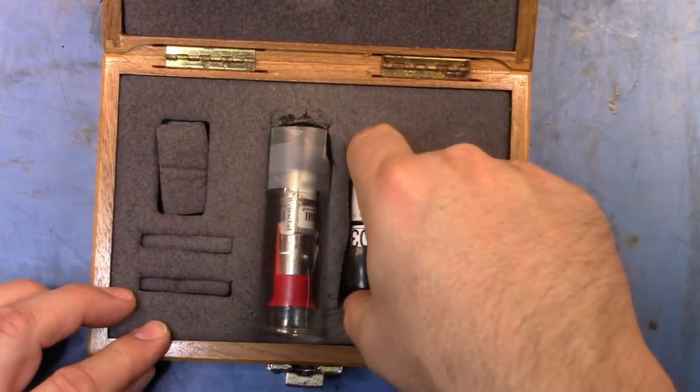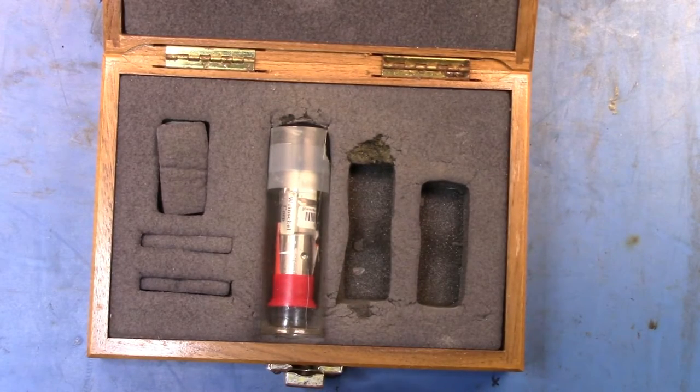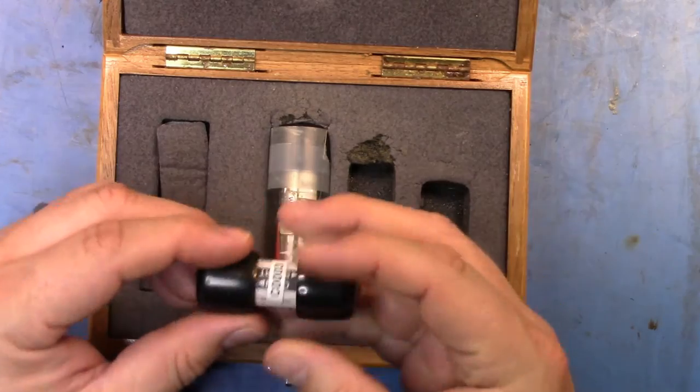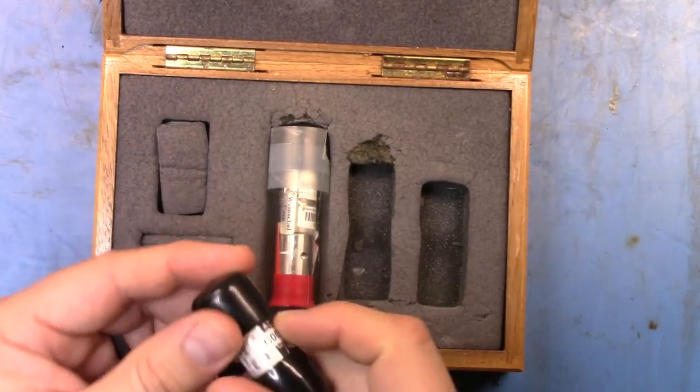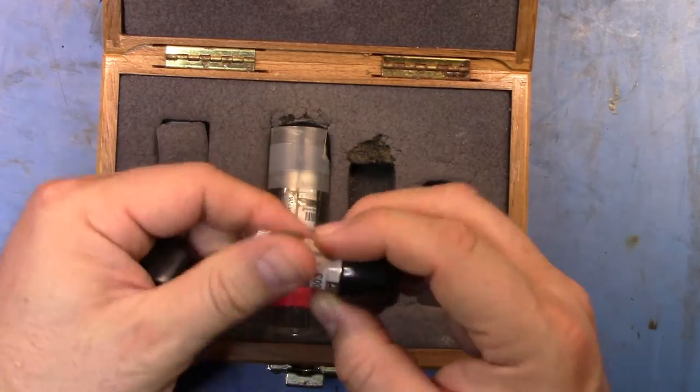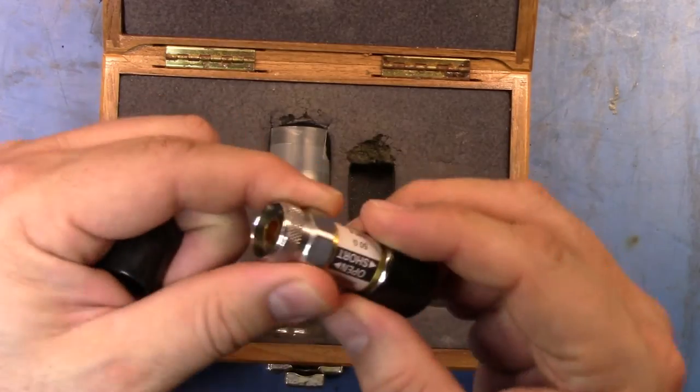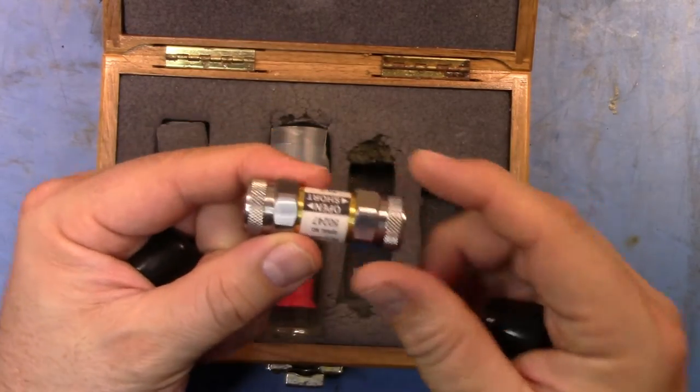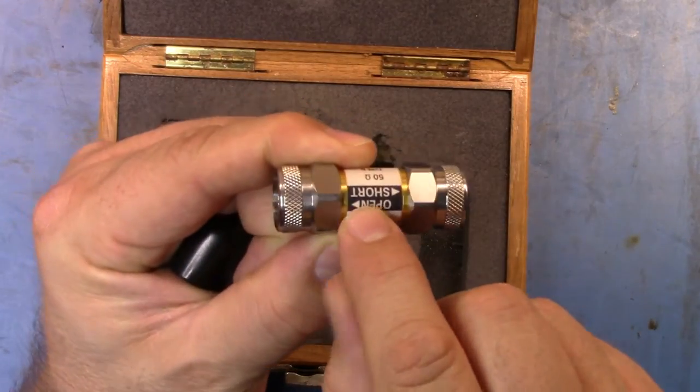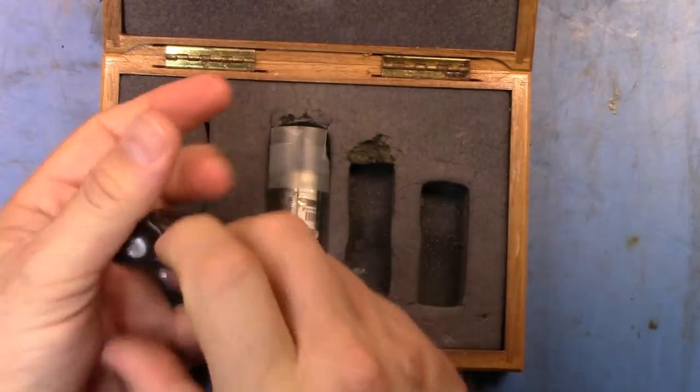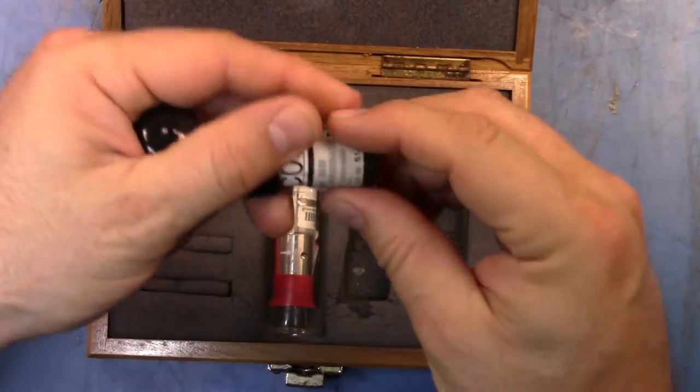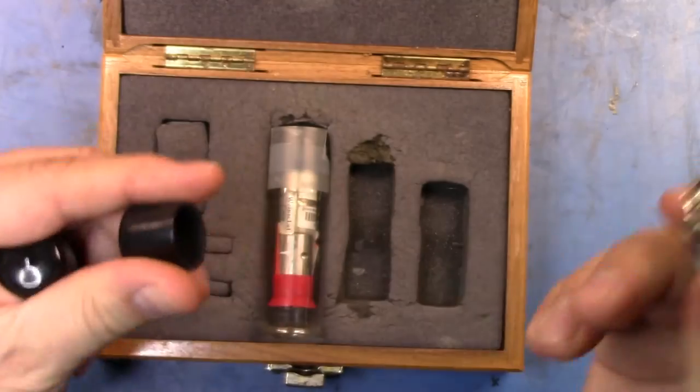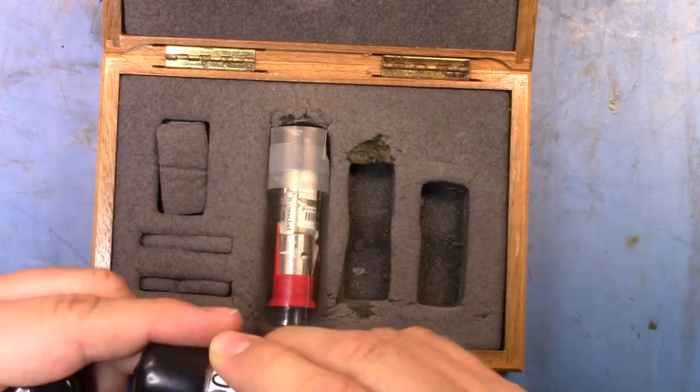I have an 8714C economy network analyzer, and so the economy kit is more or less acceptable for that. What you have here is the classic combined Agilent open short, and then you have a 50 ohm precision load.